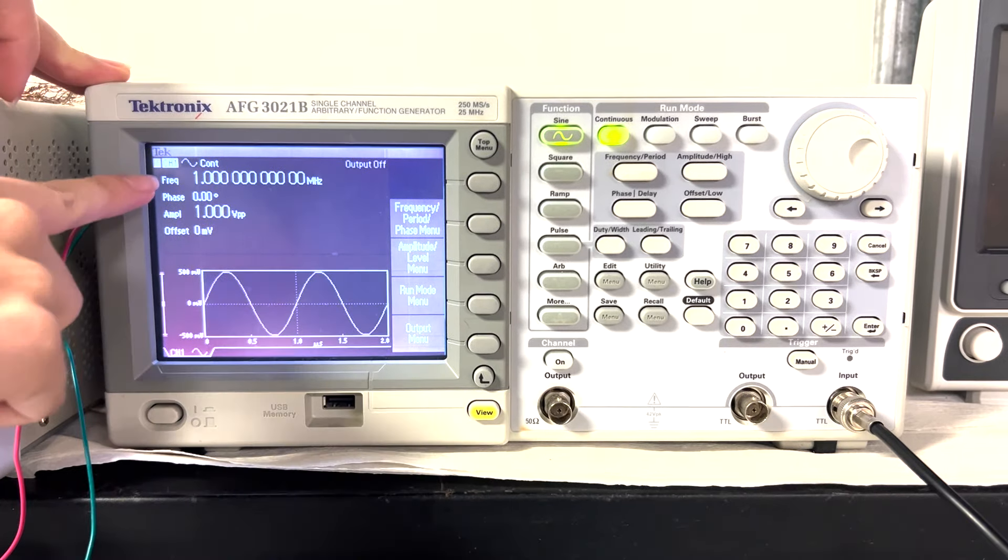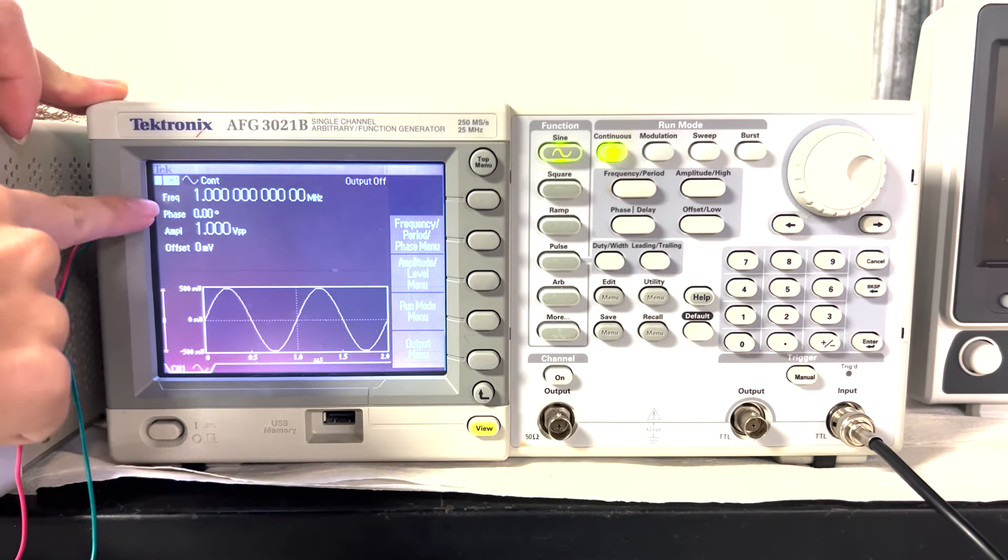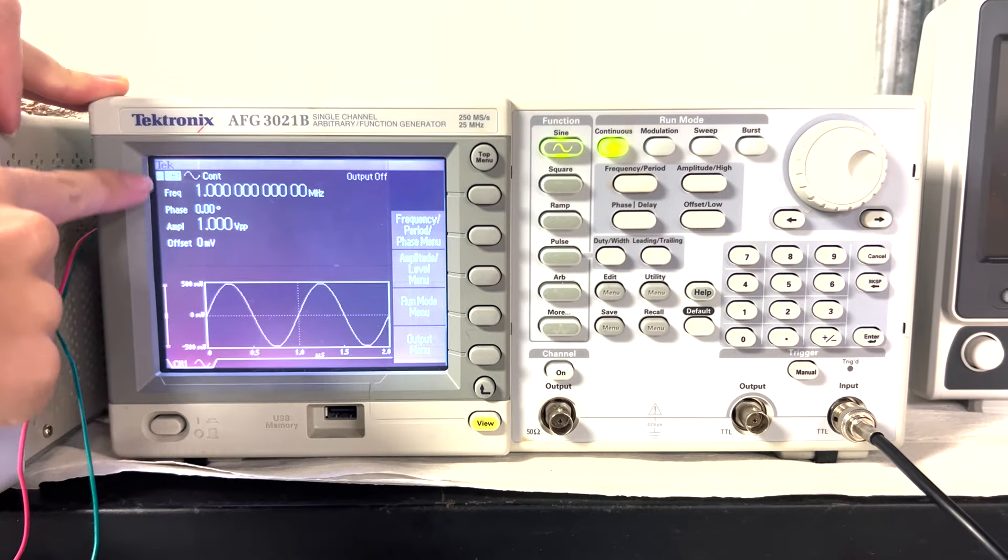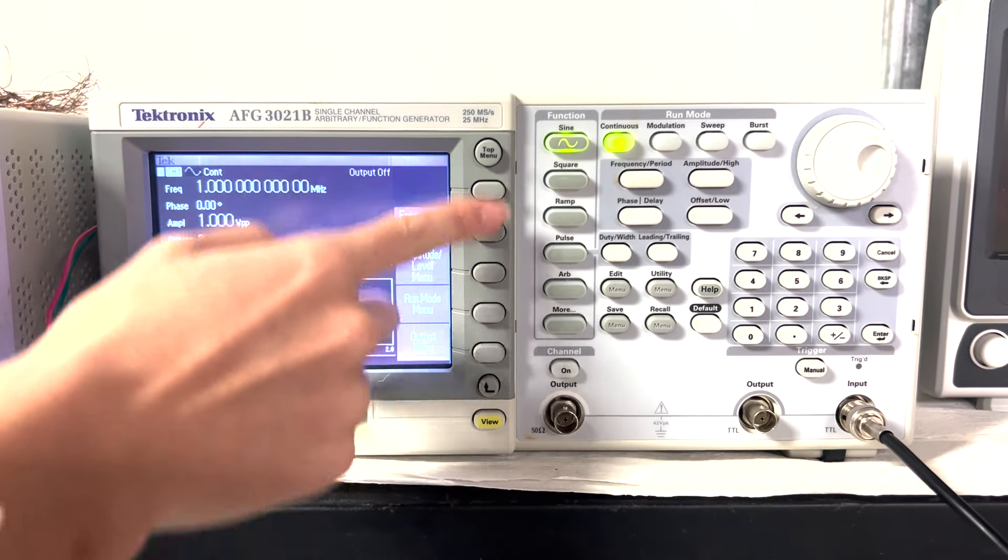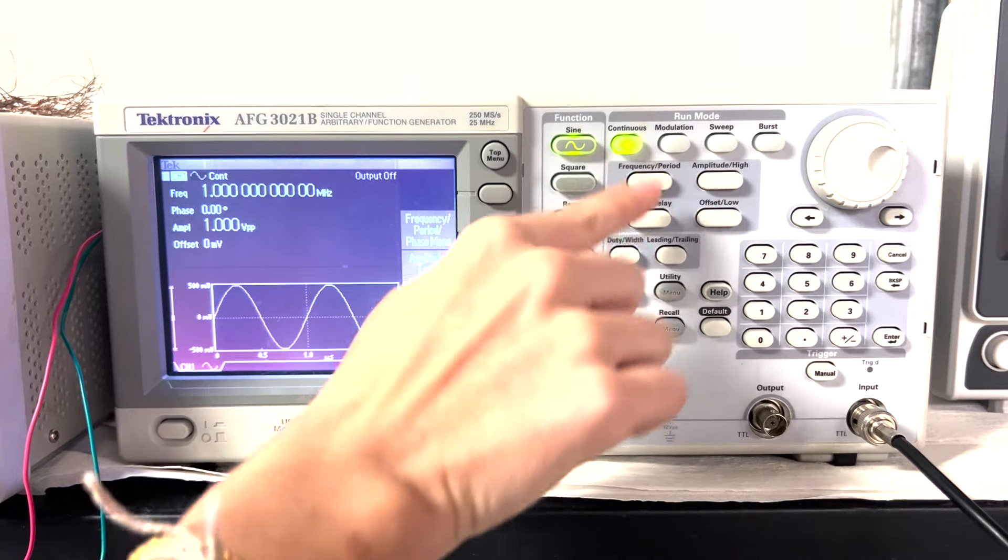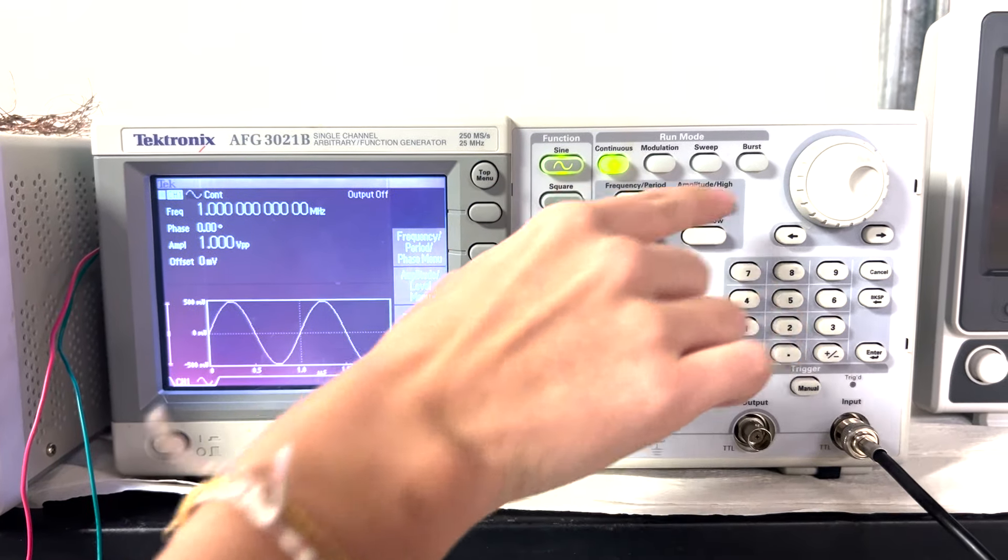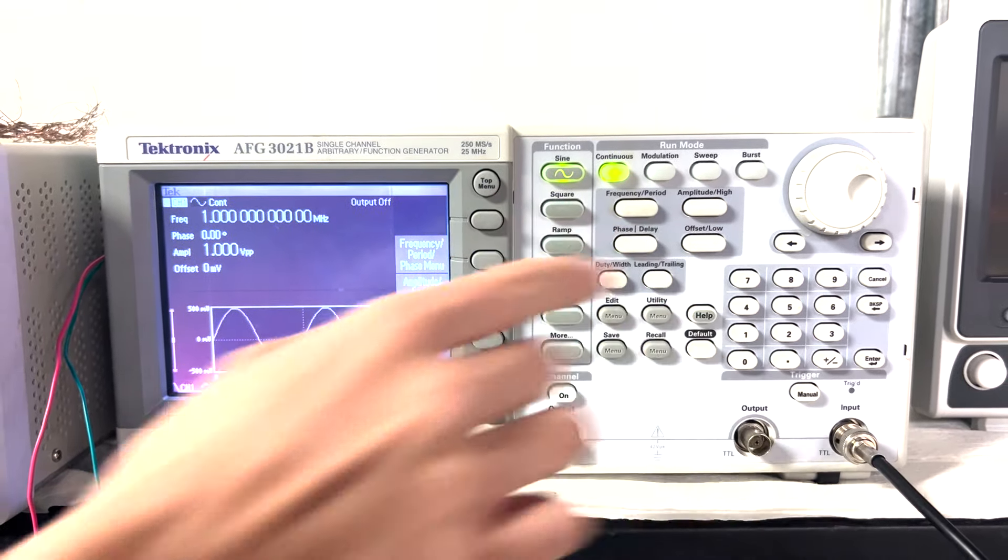There's frequency, phase, amplitude, and offset. You can change these with these buttons, or you can use these buttons. You see how this one has frequency, period, amplitude, phase, and offset.